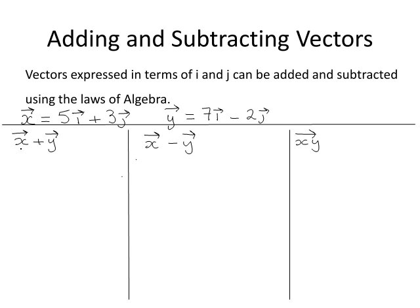The first part asks you to find the vector x plus the vector y. So filling in for the vector x is 5i plus 3j plus, then filling in for the vector y, 7i minus 2j.